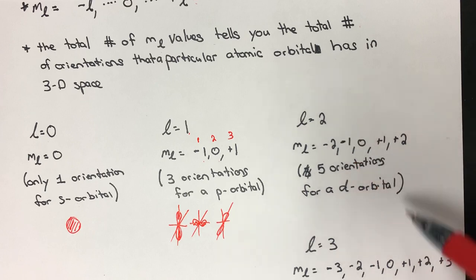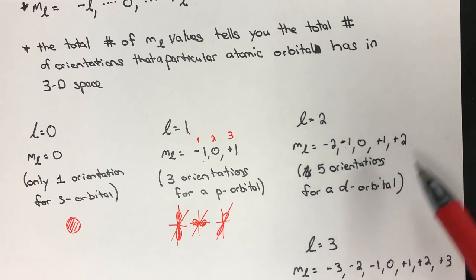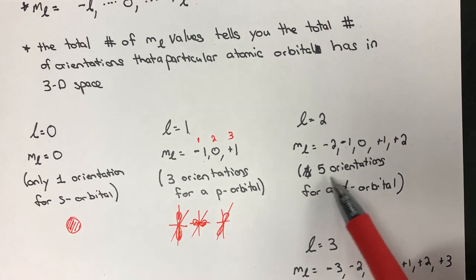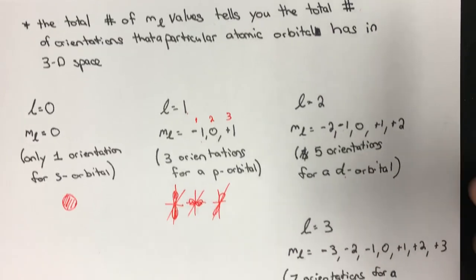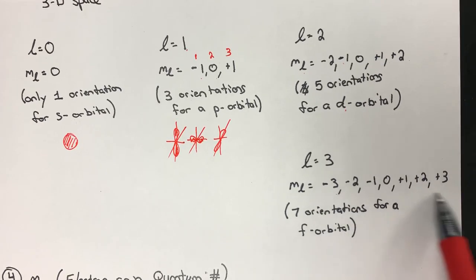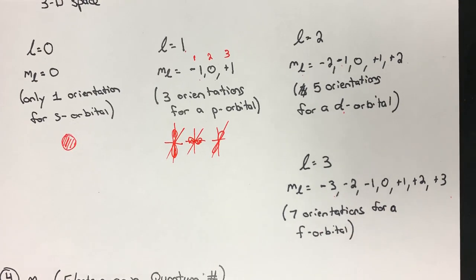When we get to L equals two, we find five different allowable values for m sub L, giving five orientations for d type orbitals. And when we get to L equals three, there are seven orientations for f type orbitals.